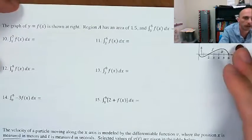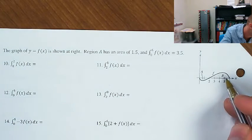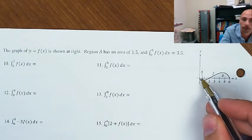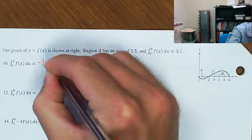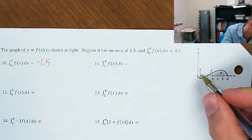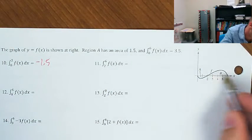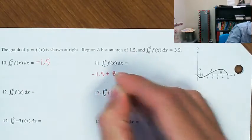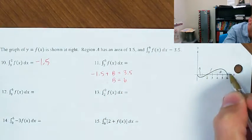The graph of y = f(x) is shown. Region A has area 1.5, and the integral from 0 to 6 of f(x) dx is 3.5. The integral from 0 to 2 is going to be negative — because the area is underneath the x-axis — so that integral is negative 1.5. Then: negative 1.5 plus the integral from 2 to 6 equals 3.5, so B equals 5, meaning the integral from 2 to 6 is 5.